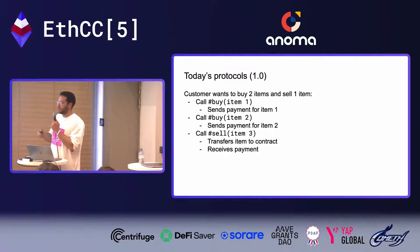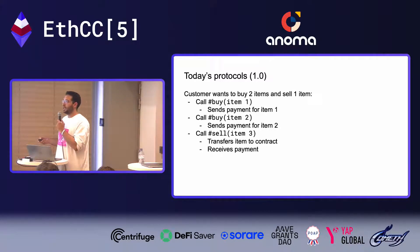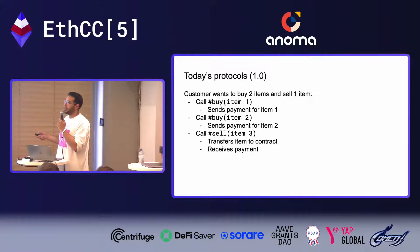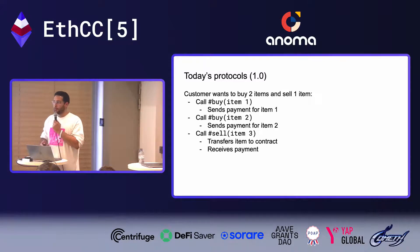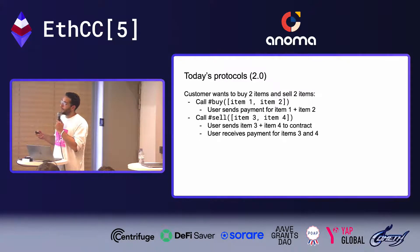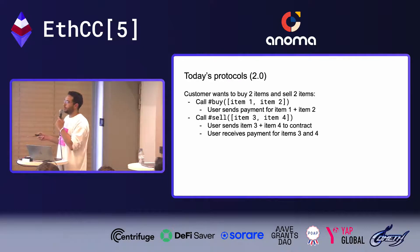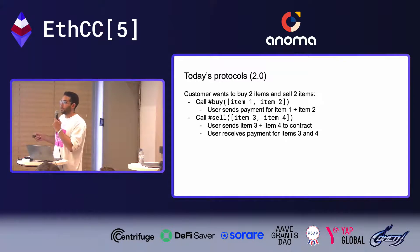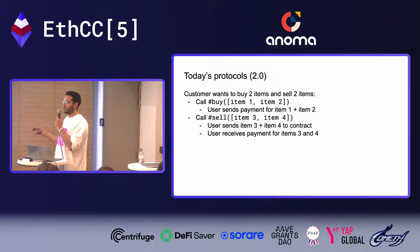Version one is naive — there are extra calls and extra transfers, more expensive than it needs to be. You might want to batch all your buys and sells, so you refactor to allow the user to specify multiple items they want to buy, send the net payment, then specify multiple items to sell and receive net payment.